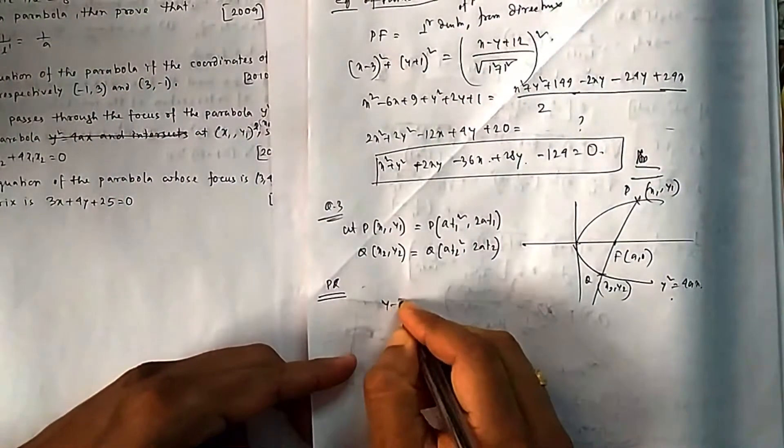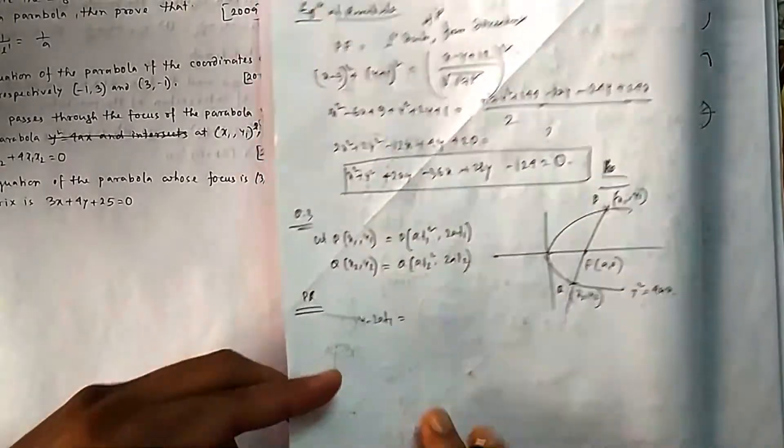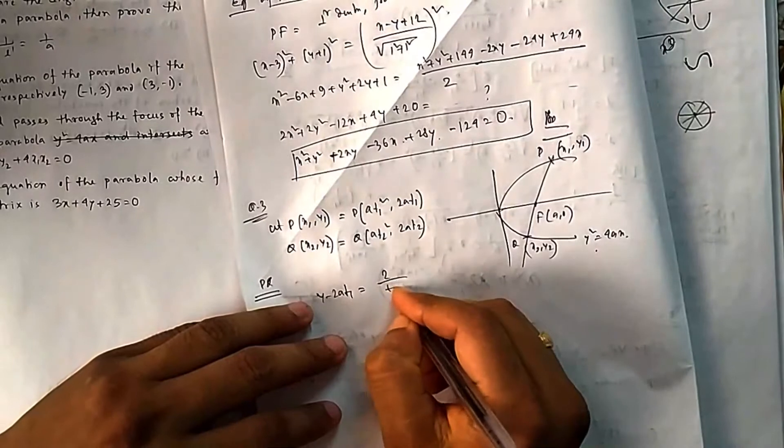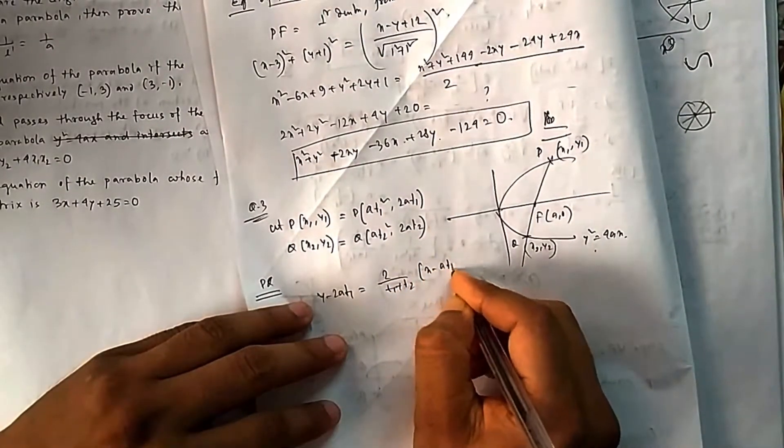So it will be y - 2at₁ = 2/(t₁ + t₂) times (x - at₁²).